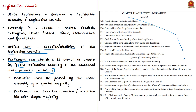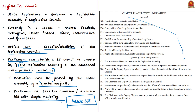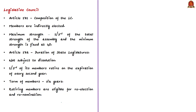For creating or abolishing a legislative council, the legislative assembly of the concerned state must pass a resolution by a special majority — that is, a majority of the total membership of the assembly and a majority of not less than two-thirds of members present and voting. After this resolution, Parliament passes the law, and such a law of Parliament is not deemed as an amendment of the Constitution under Article 368. Therefore, in Parliament it is passed like ordinary legislation with a simple majority.